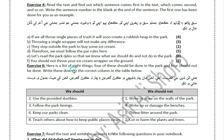Here is a list of 8 things. Four of these should be done in the park, and four should not be done. Place each item in the correct column in the table below.